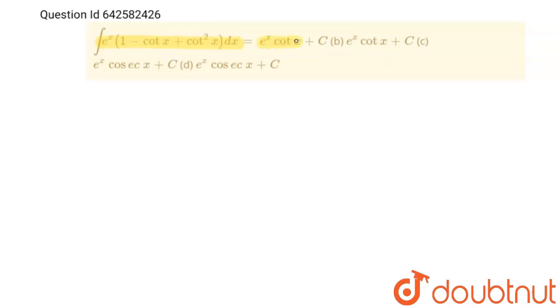First option is e to the power x into cot x plus c, second option is e to the power x into cot x plus c and this is third option, this is fourth option.